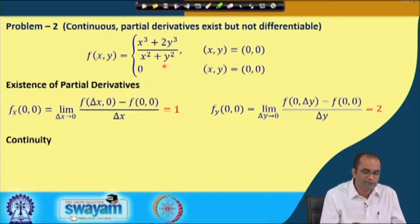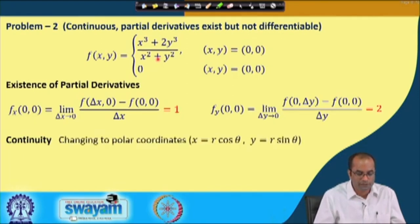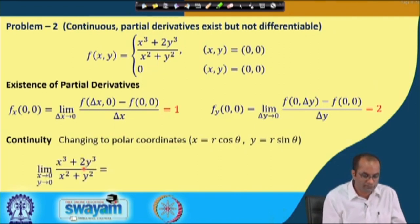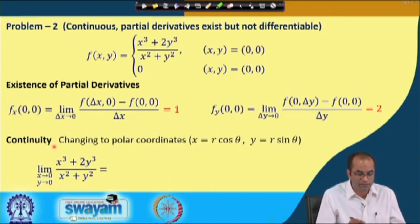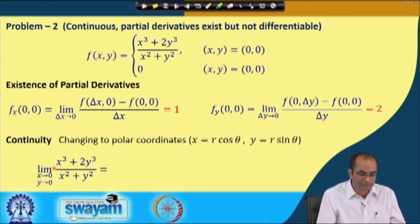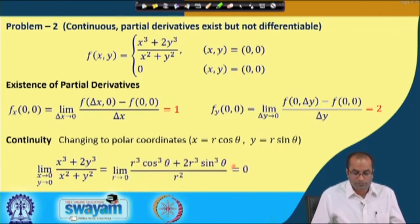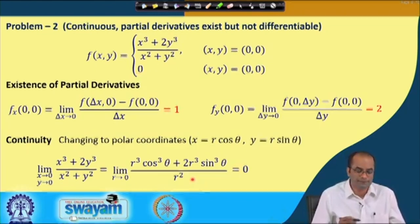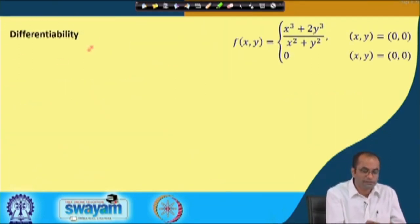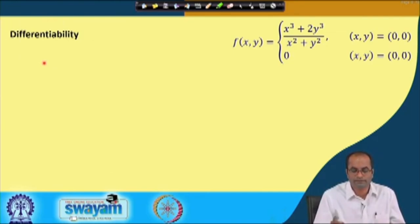Checking continuity using polar coordinates x = r cos θ, y = r sin θ: the numerator gives terms of order r³ (from cos³θ and 2 sin³θ), while the denominator is r², leaving one factor of r times a bounded function. As r → 0, the limit is 0, equal to f(0,0). So the function is continuous at the origin.